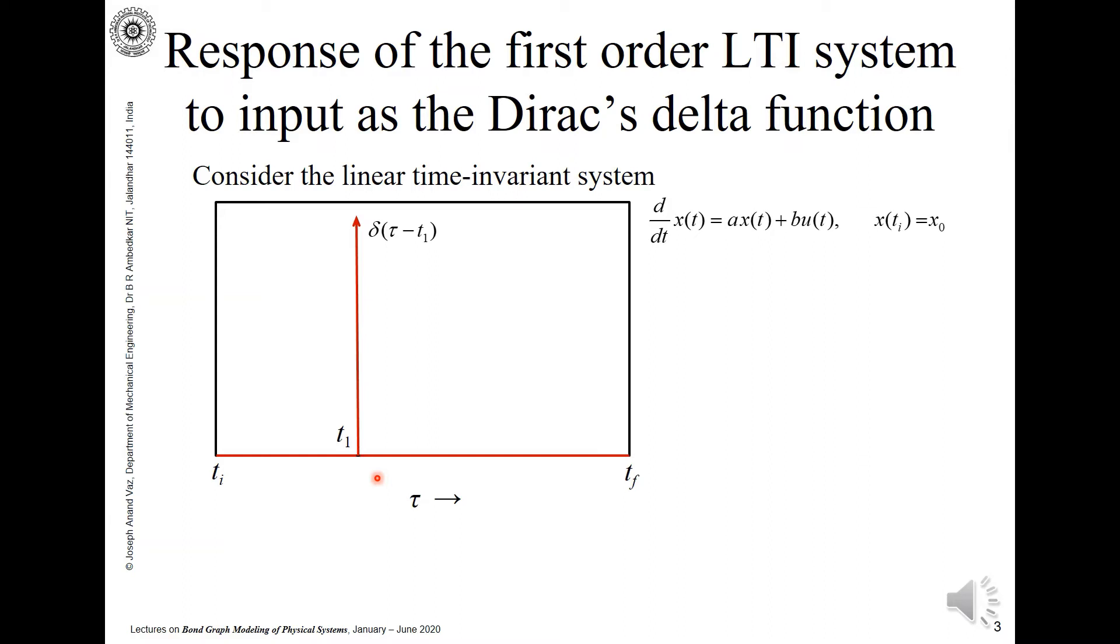Then there is a spike delta tau minus t1 and then again it becomes 0. So, this is the Dirac delta function which is input to this linear time invariant system.